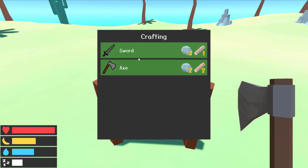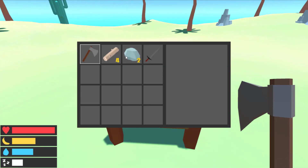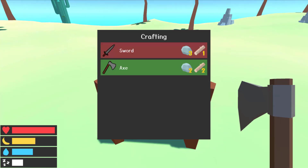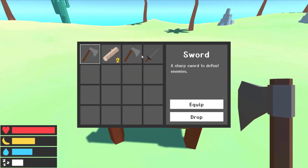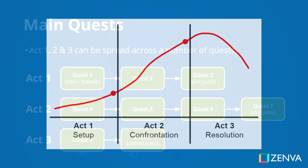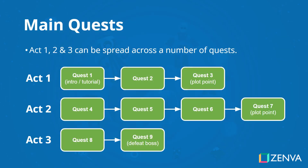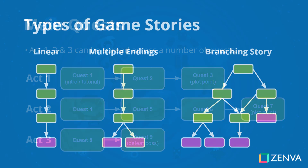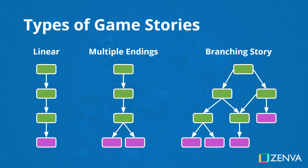Then you'll explore how to design and tell stories within video games. Being an interactive medium, video games have so many different ways they can develop a narrative. You'll look at the three-act structure, who the protagonist and antagonist are, different storytelling methods, as well as quests and branching storylines.